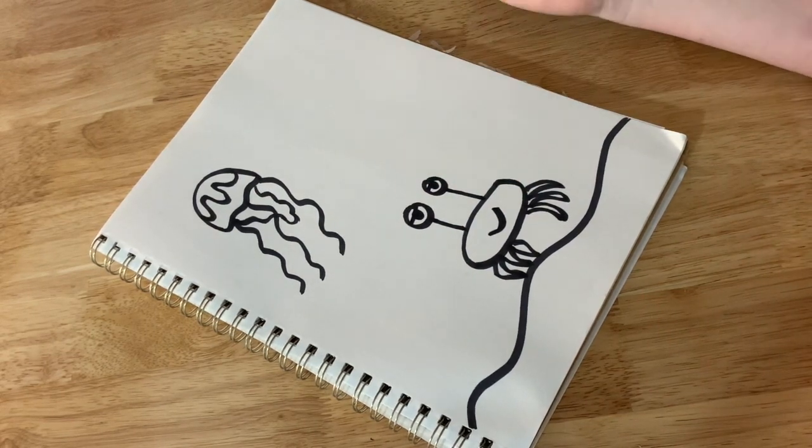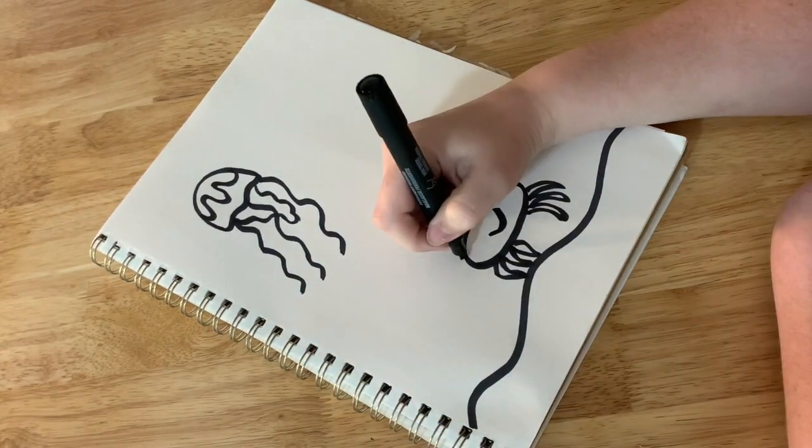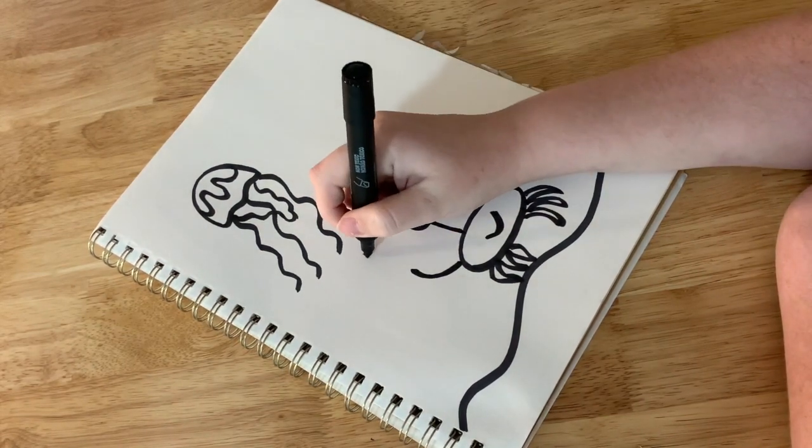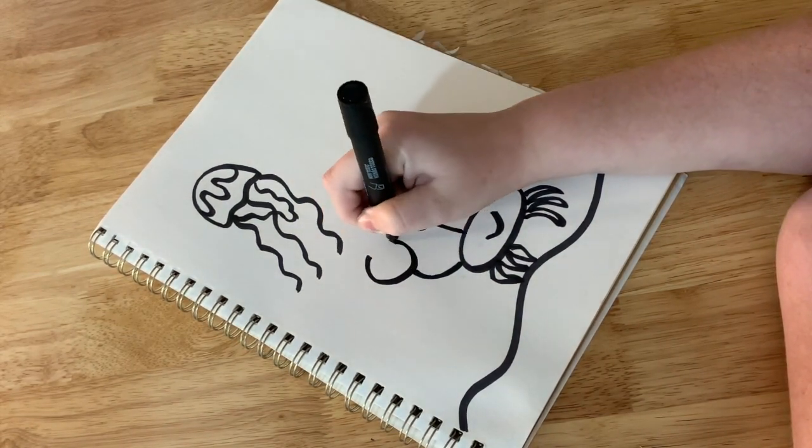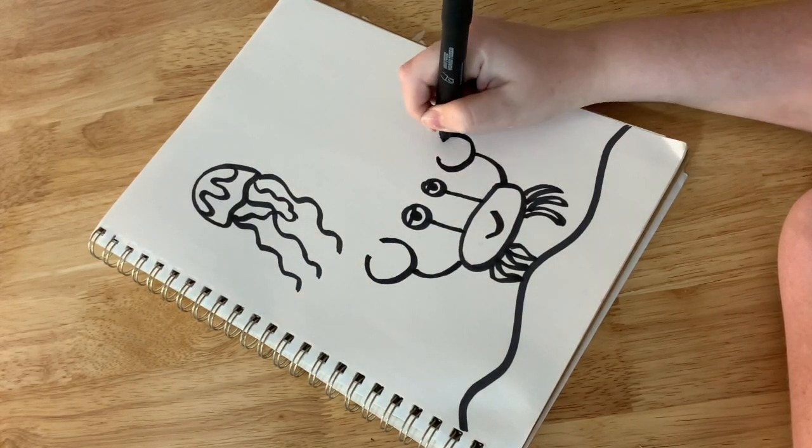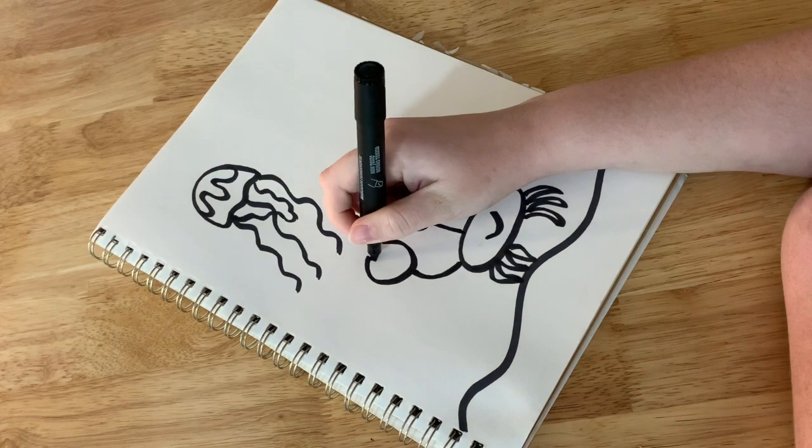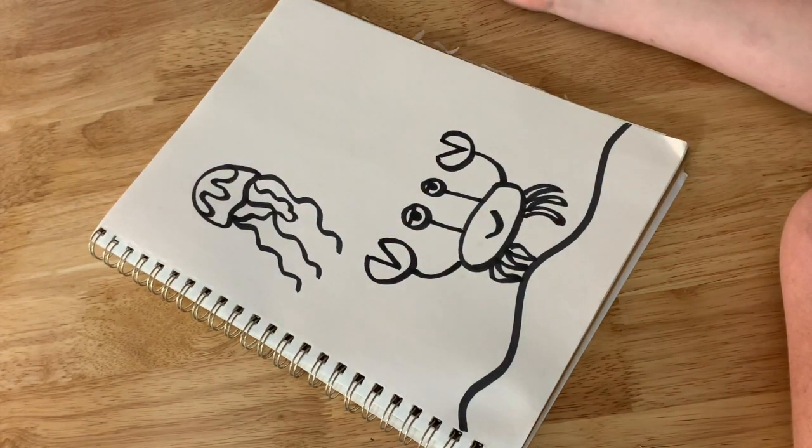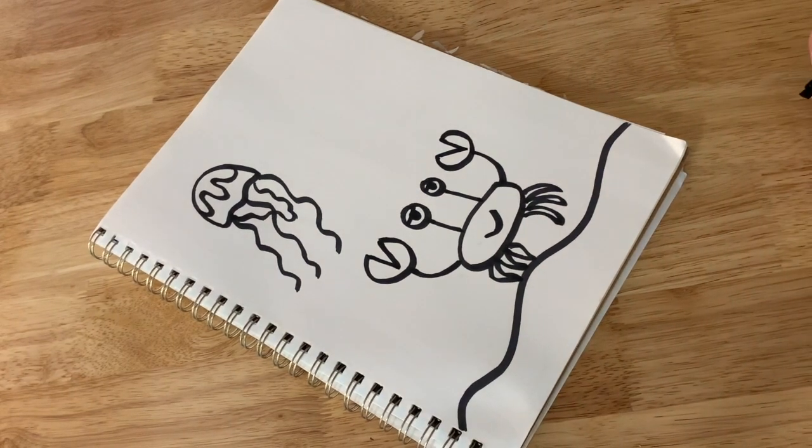And now our crab needs some pinching claws. So I'm gonna draw two more curved lines coming out either side. And I'm gonna draw a circle that is a little bit open at the top on either side. And then all you need to do is draw a V to connect them. So there is our crab.